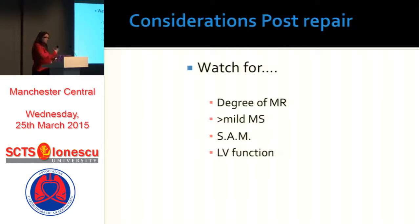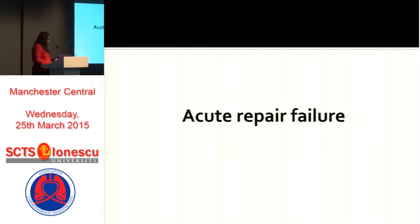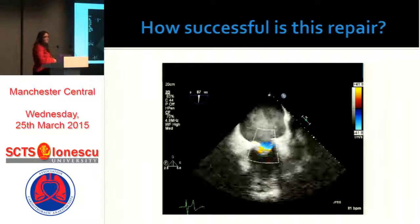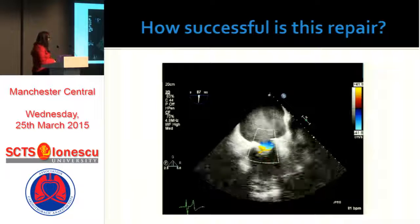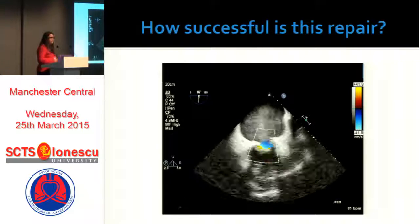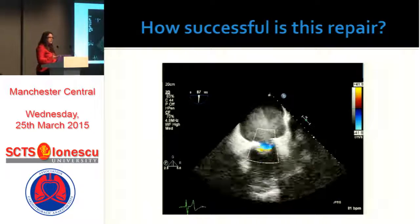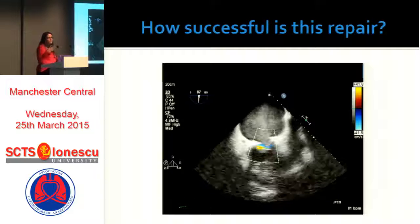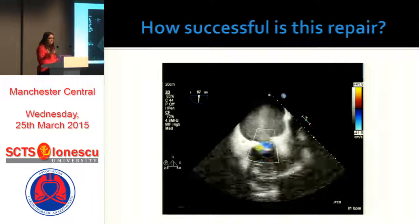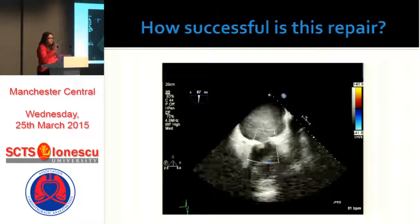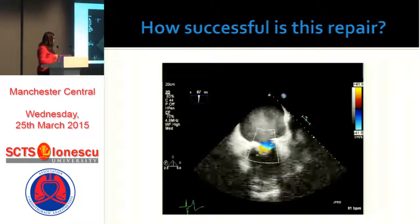Back in the operating room — the surgeon has repaired a valve. Looking at some pictures: in this particular case, the repair is too successful — this is mitral stenosis. The standard guidelines state this must be patient-specific, but in general, a mitral valve area bigger than 1.5 cm² should be allowed, or a mean gradient of less than 5 mmHg.